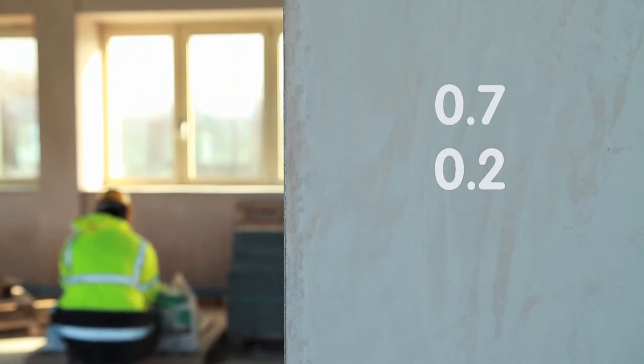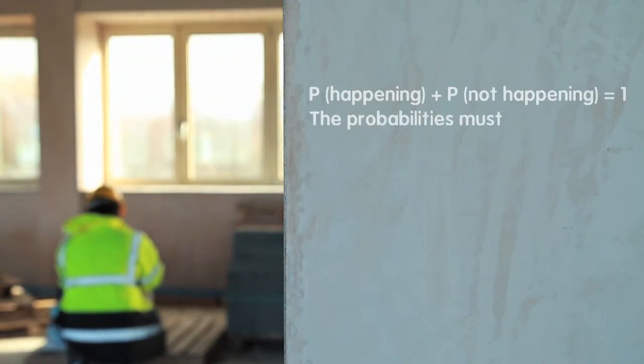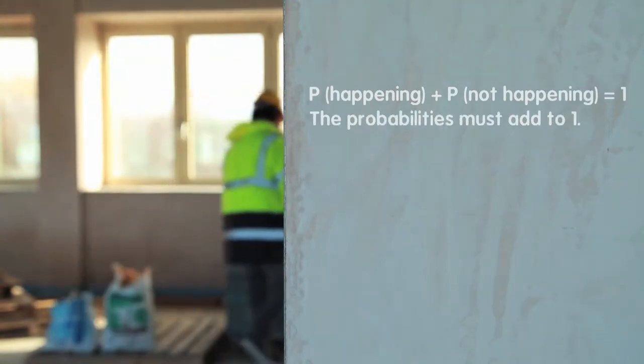We need to read the question carefully, underlining or highlighting all of the important information. We need to remember the following probability rule: the probability of something happening plus the probability of something not happening is always equal to 1.